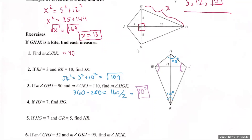For number four, HJ equals 7. Find HG. Since HJ and HG are consecutive sides of a kite, they must be congruent to each other. The correct answer is HG equals 7.